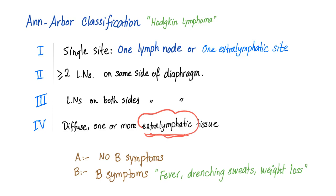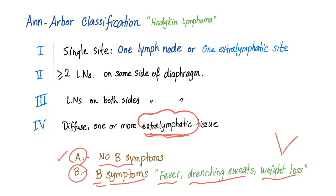We also have subtype A or subtype B. If you have no B symptoms, it's subtype A. If you have B symptoms — such as fever, drenching sweats, and weight loss greater than 10% of total body weight — it's subtype B. For instance, if stage 3 has B symptoms, we call it stage 3B.